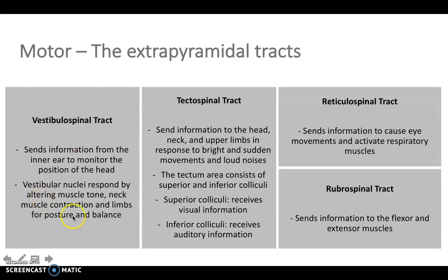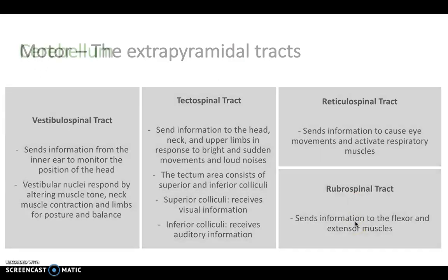The vestibulospinal tract uses the inner ear to monitor positions of the head and can alter muscle tone to adjust this. The tectospinal tract sends information to the head, neck, and upper limbs to respond to bright and sudden movements and loud noises. The reticulospinal tract is all about eye movement and respiratory muscles, and the rubospinal tract sends information to the flexor and extensor muscles.